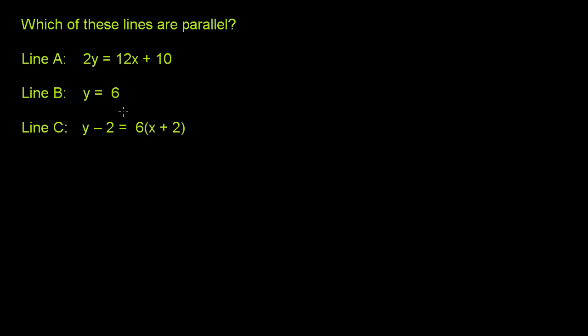So all we have to do here is figure out the slopes of each of these lines. And if any of them are equal, they're parallel. So let's do line A. Line A, it's 2y is equal to 12x plus 10. We're almost in slope-intercept form. We can just divide both sides of this equation by 2.